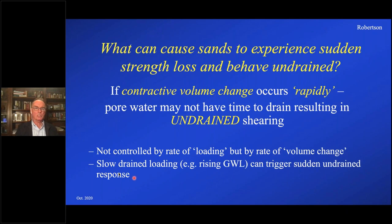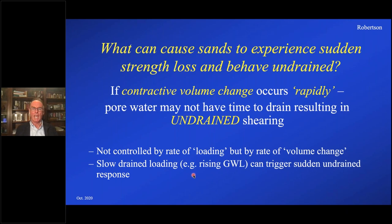So the rate of volume contraction could be relatively slow, but it's a very slow process for that water to get out, and so it can switch to undrained shearing even though the loading could be quite slow. It's not controlled so much by the rate of loading, but actually by the rate of volume change. That means that slow drained loading — for example, a rising groundwater level — can trigger sudden undrained response. We had a graduate student at the U of A, Sasitharan, and we had a publication in the mid-1990s in the Canadian Geotechnical Journal where we illustrated that point: samples of loose sand were kept at roughly constant shear stress while the mean effective stress was decreased slowly with the drainage valve open, and then it reached the yield envelope, triggering large volume contraction and significant strength loss.